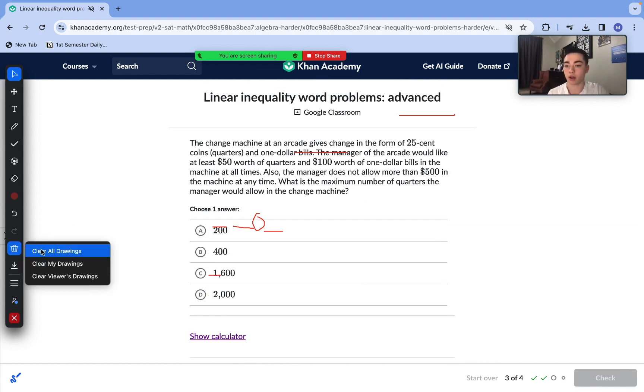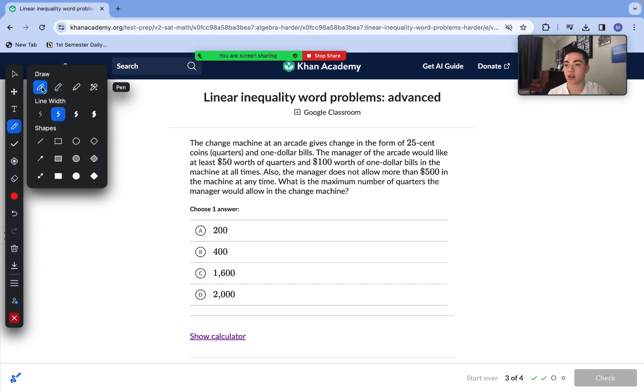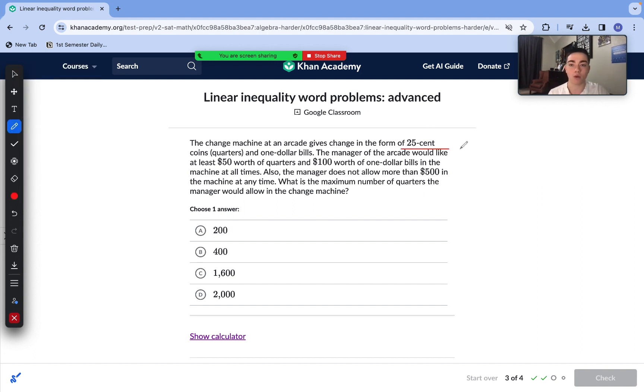On to our third question here. The change machine at an arcade gives change in the form of 25 cent coins and $1 bills. The manager of the arcade would like at least $50 worth of quarters and $100 worth of $1 bills in the machine at all times. Also the manager does not allow for more than $500 in the machine at any time. What is the maximum number of quarters the manager would allow in the change machine?